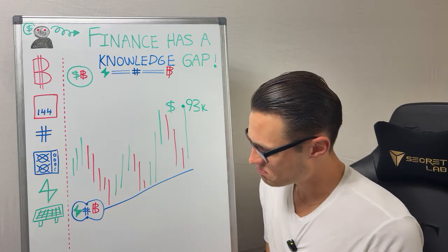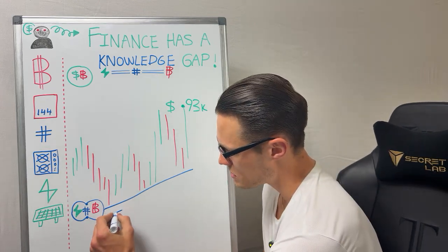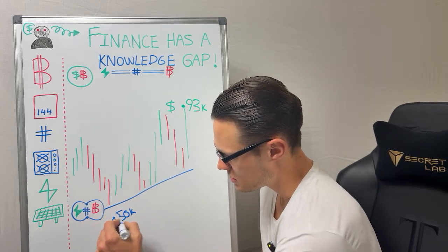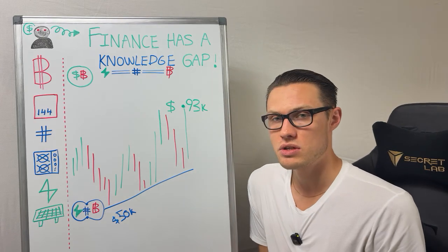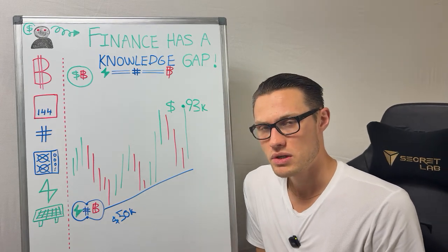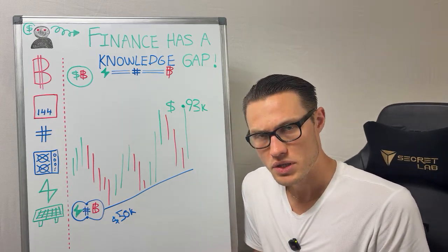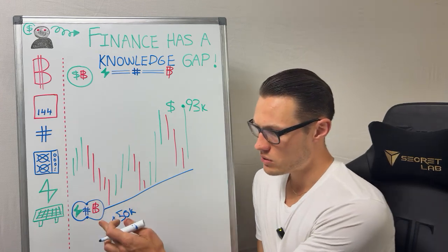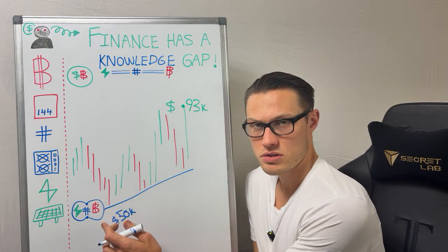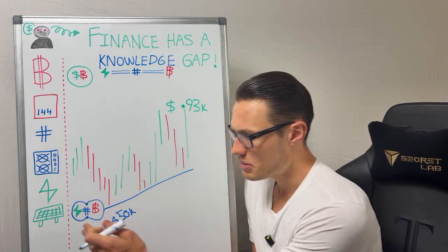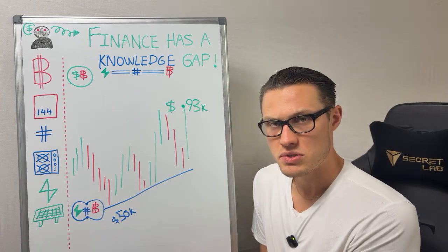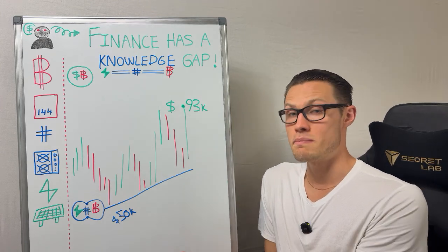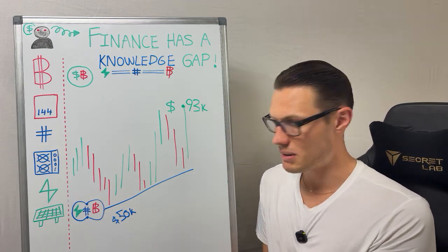Right now, if a miner is spending $50,000 of electricity to produce a $93,000 Bitcoin — you may have heard of the halving. When the halving comes along, the amount of Bitcoin that the miner earns cuts in half, but his electricity bill stays the same. So the Bitcoin halving for miners is actually the doubling.